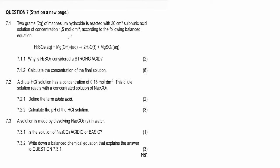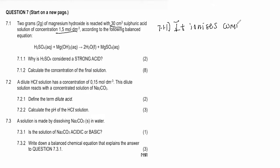We have question seven, still on acids and bases. It says two grams of magnesium hydroxide is reacted with 30 cm³ of sulfuric acid solution of concentration 1.5 mol·dm⁻³, according to the following balanced equation. Question 7.1.1 asks: why is sulfuric acid considered a strong acid? The answer is because it ionizes completely in water.